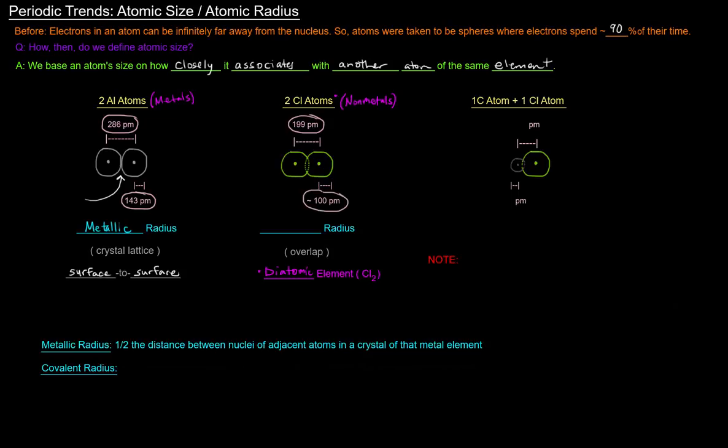And so half that is 99.5 or approximately 100 picometers. Now that's going to be the atomic radius of chlorine, and since it's a non-metal, we're going to call this the covalent radius, which might ring a bell if you know about covalent bonding.